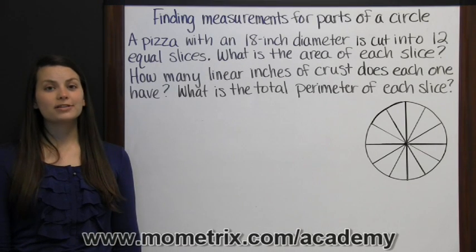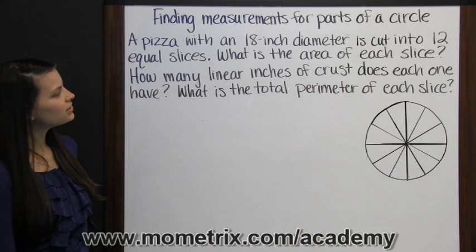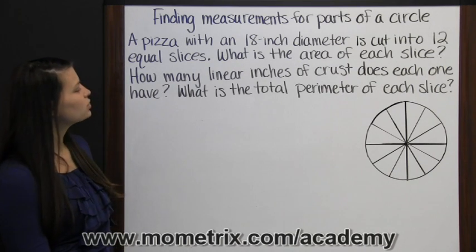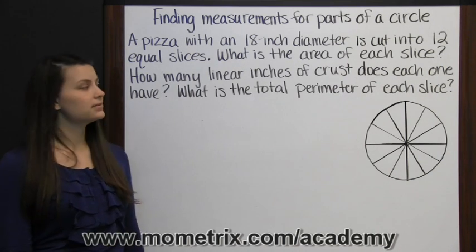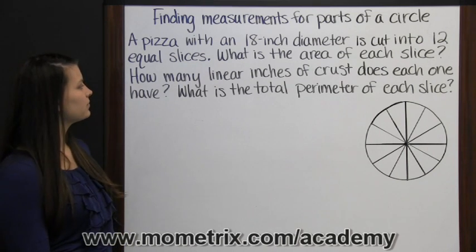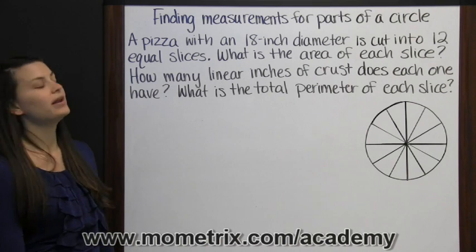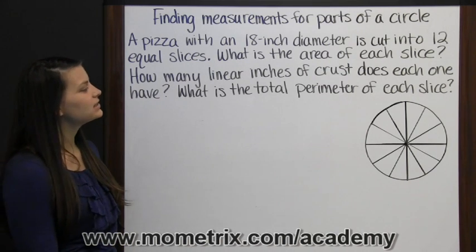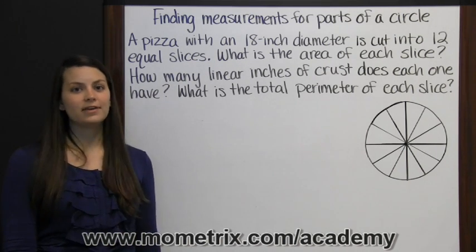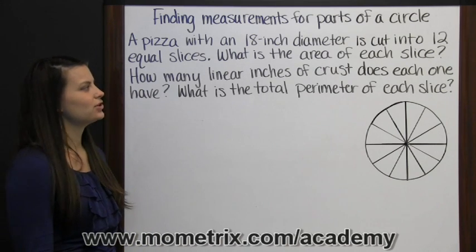Finding measurements for parts of a circle. A pizza with an 18 inch diameter is cut into 12 equal slices. What is the area of each slice? How many linear inches of crust does each one have? What is the total perimeter of each slice? We're going to take this one question at a time.